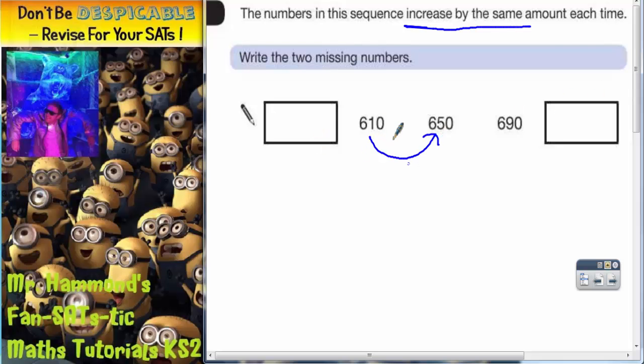When we're going forwards in the sequence we can see that we're adding on 40. Because 610 add 40 is 650, add 40 again is 690. So you'd expect to be adding 40 again.